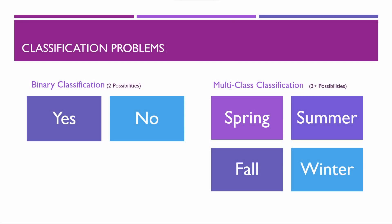Both Die Hard and the Loan Approval models are examples of binary classification, where something is either going to be one of two different possibilities. Other examples might involve predicting if a customer or employee is going to leave your organization, or if a mole is cancerous or benign. Sometimes you want to predict if something is one of several different possibilities. When there are three or more possibilities, we call this a multi-class classification problem.